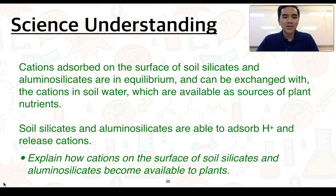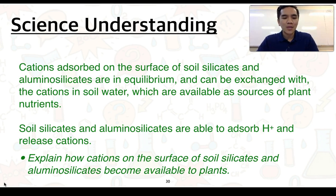Cations absorbed onto the surface of soil silicates and aluminosilicates are in equilibrium and can be exchanged with the cations in soil water, which are available as sources of plant nutrients. Secondly, soil silicates and aluminosilicates are able to absorb H⁺ and release cations.